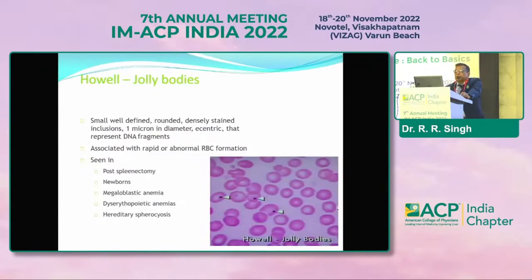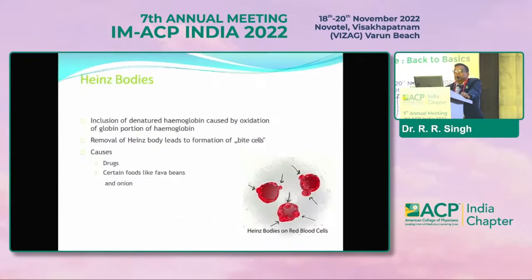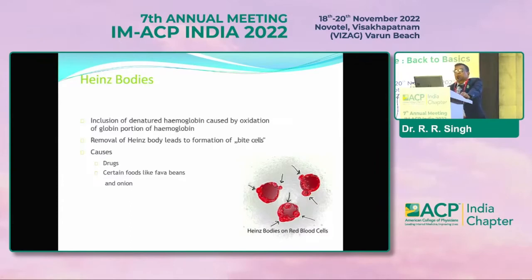Howell-Jolly bodies are associated with rapid absorption of RBCs and are seen in newborns, megaloblastic anemia, and hereditary spherocytosis. Heinz bodies are inclusions of denatured hemoglobin caused by oxidation of the hemoglobin portion; the causes include certain drugs and certain foods like fava beans and onions, which can also trigger reactions producing these bodies.